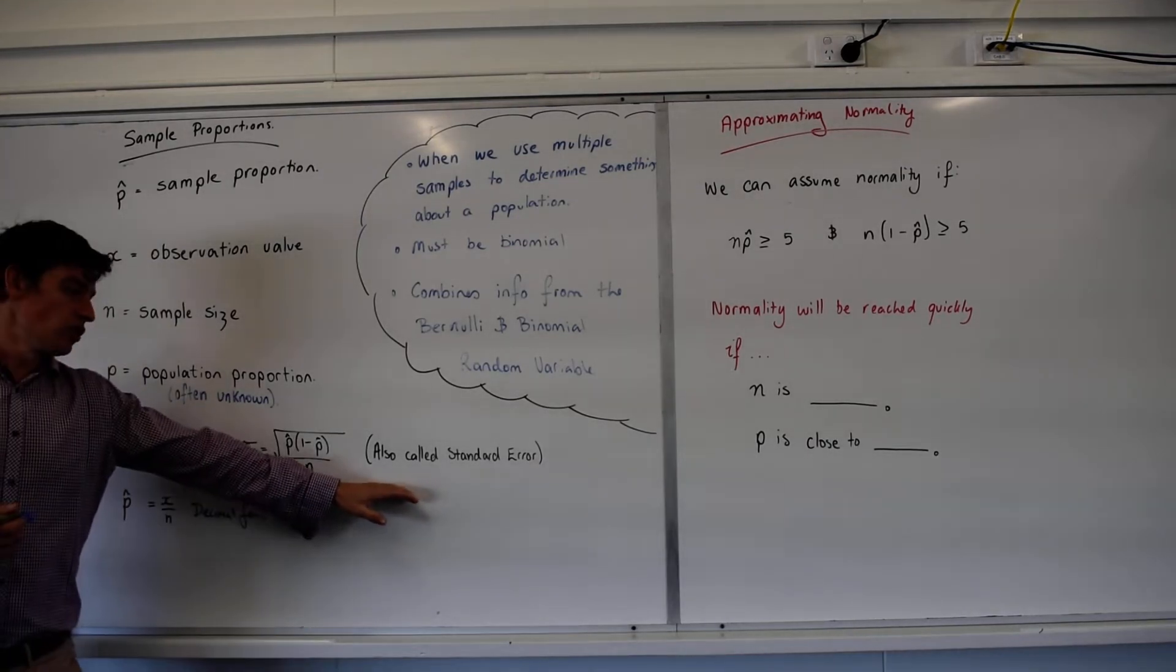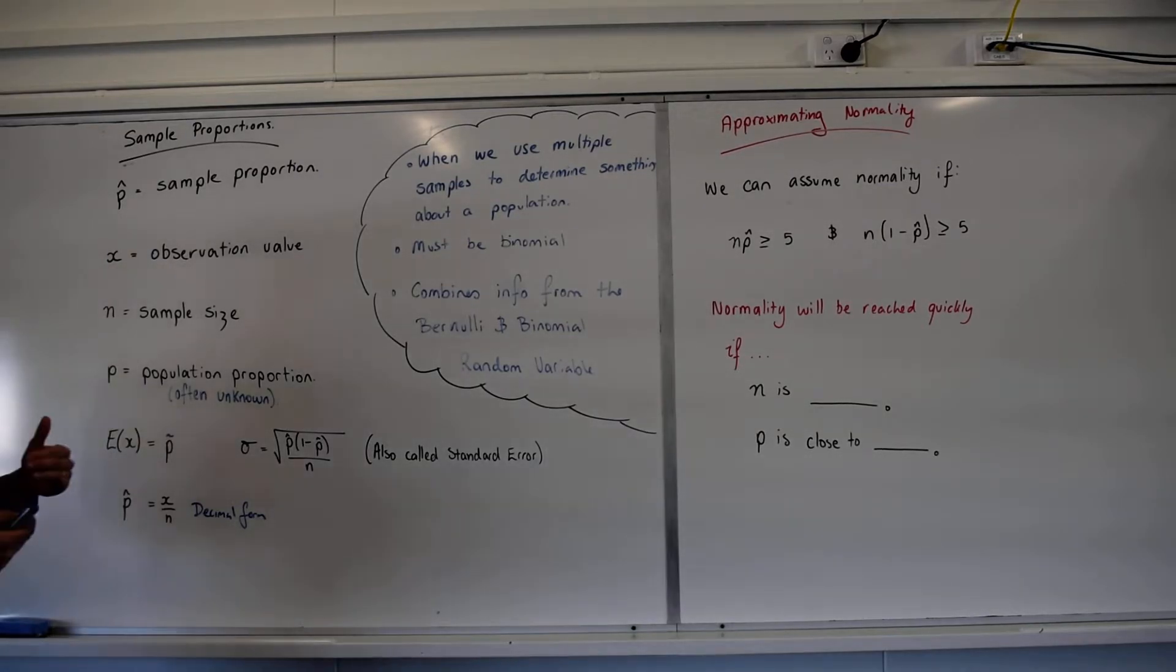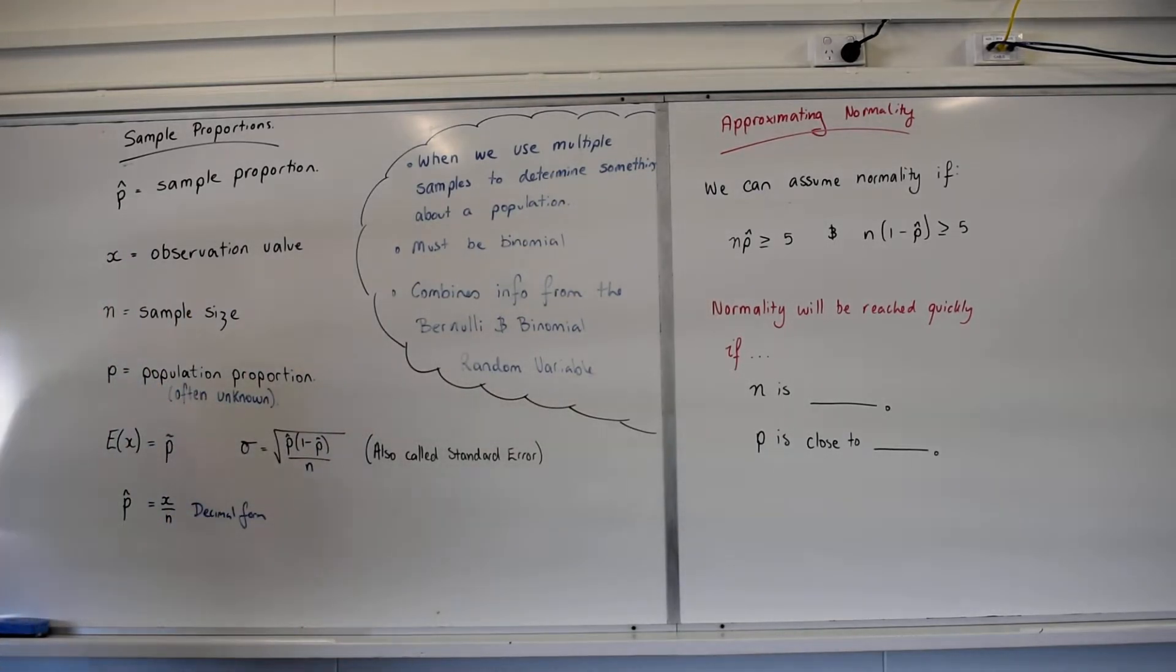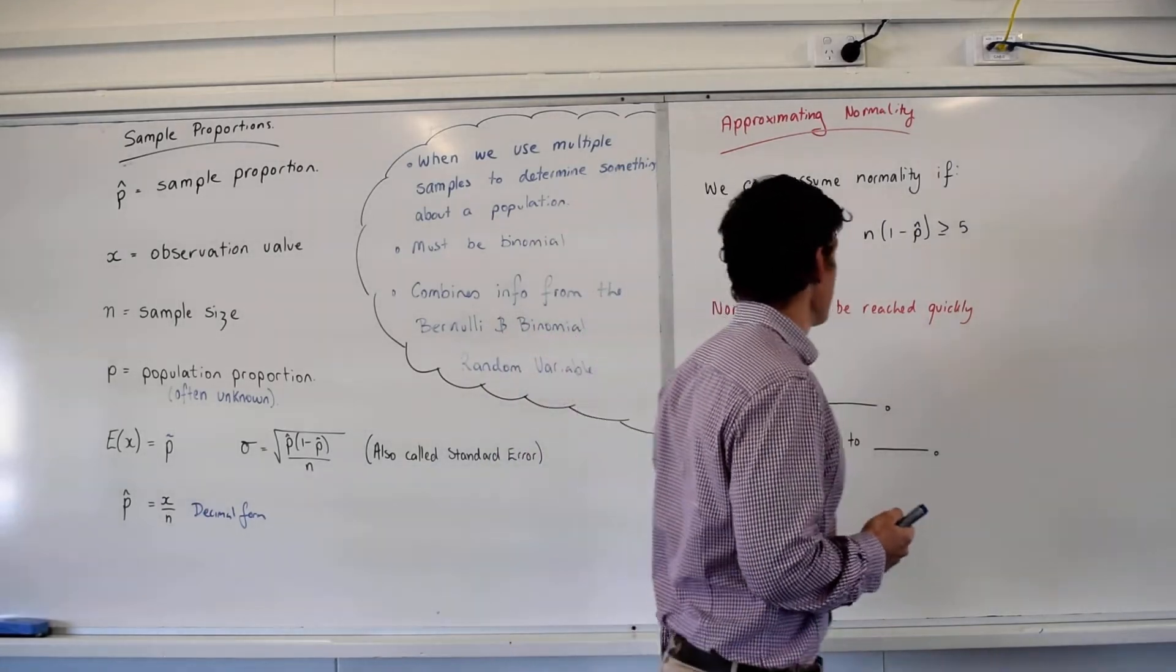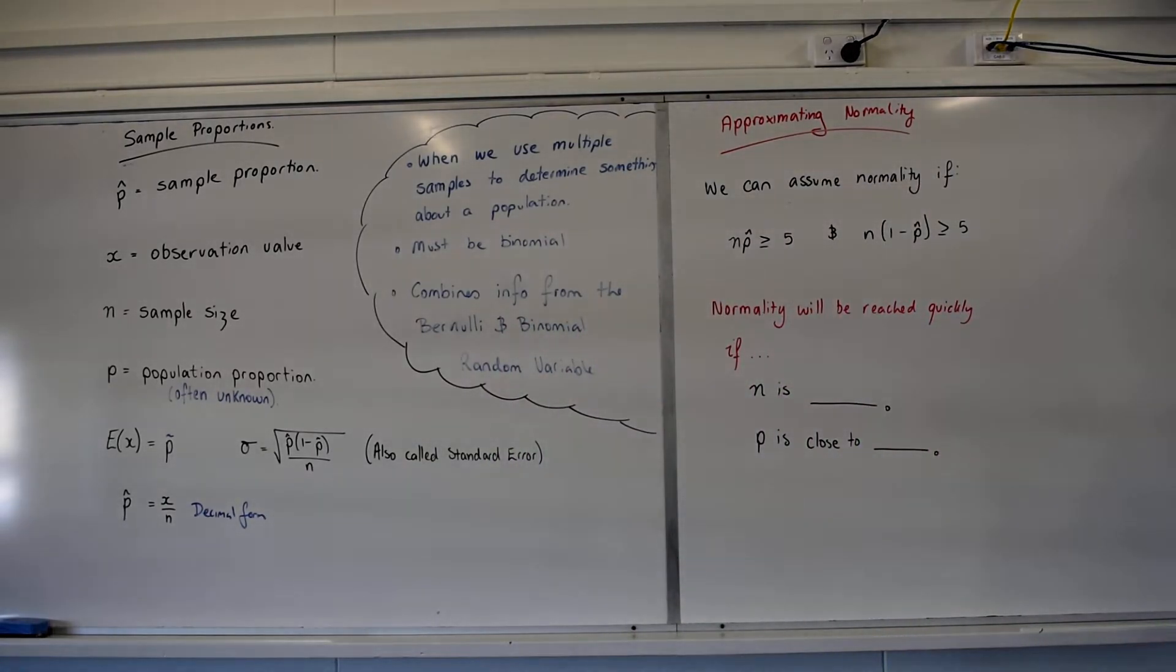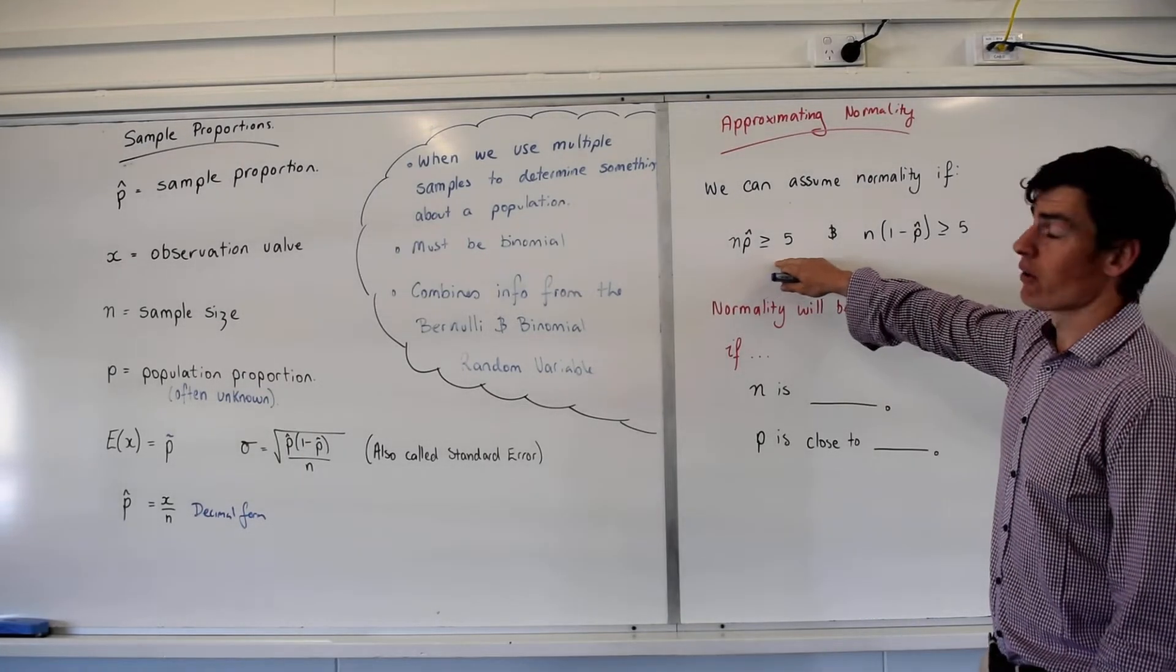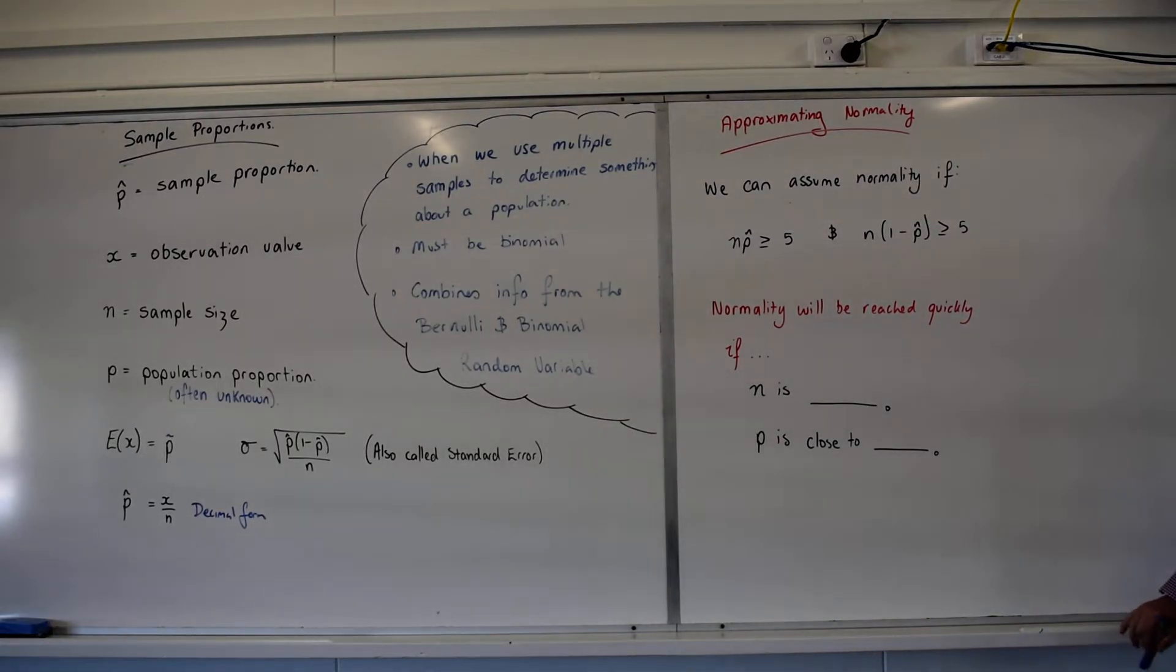Standard deviation of our sample proportion is often referred to as our standard error, and the reason we're going to talk about normality I'll explain soon. But assessing normality, we can assume normality if the following criteria are met with our sample proportion: that n times P hat is greater than or equal to 5, and that n times (1 minus P) is greater than or equal to 5. You have to do both, so you can't just do one.